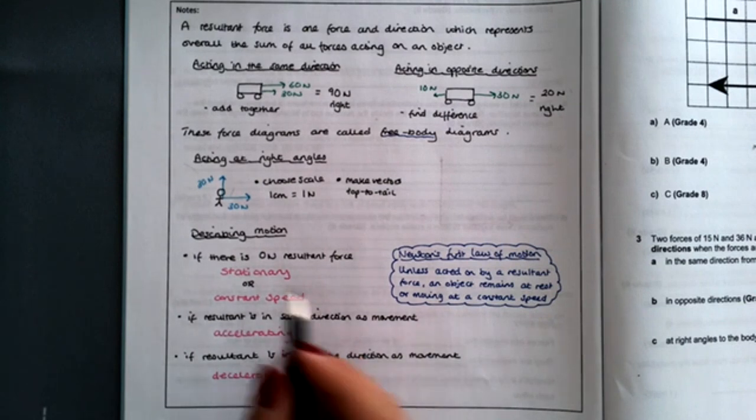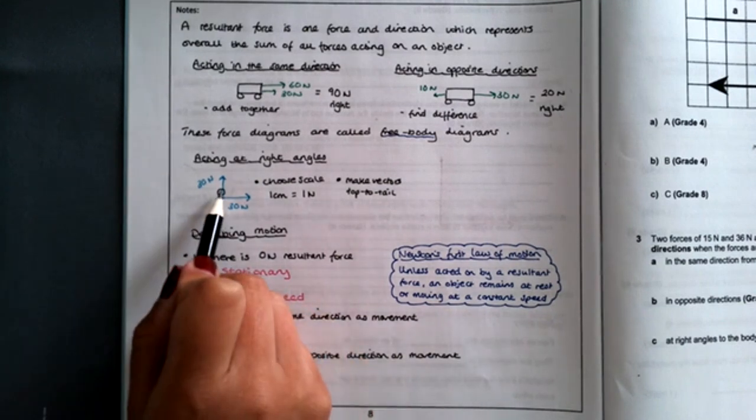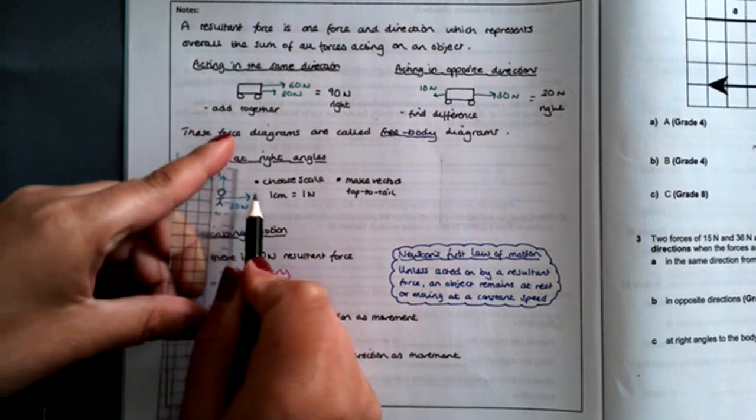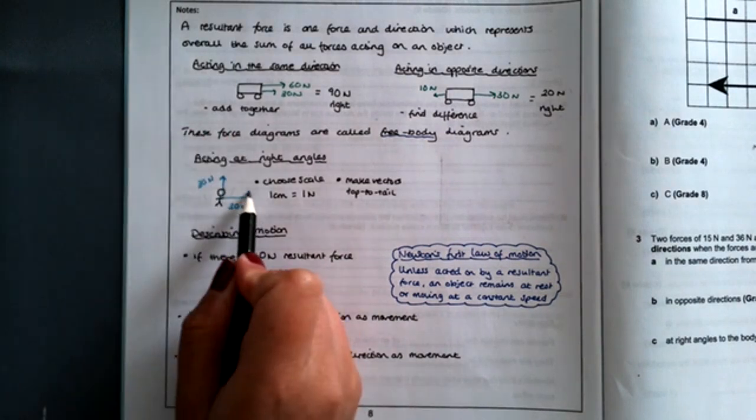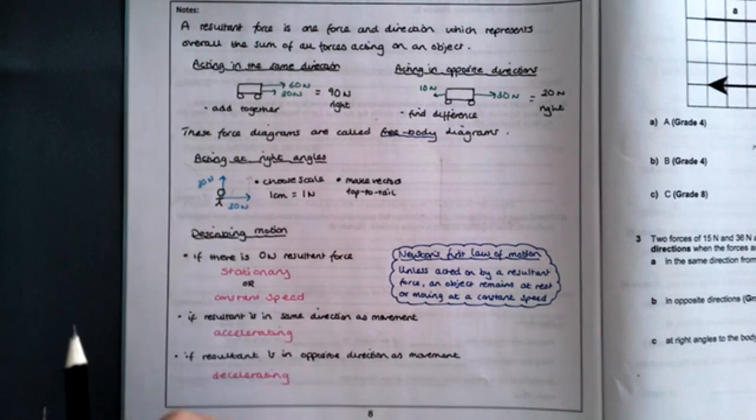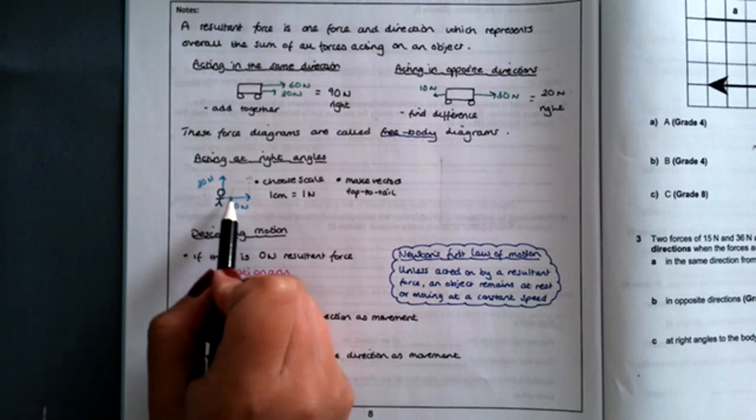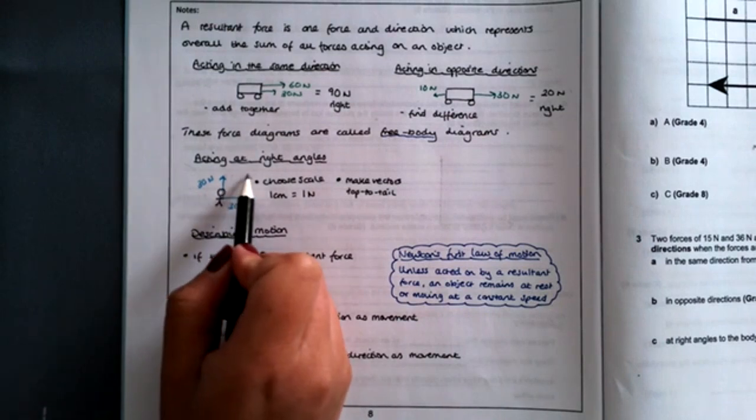There are two ways of doing this. You can move this arrow up and across and attach it to here, like so. Or you can move the bottom one and attach it to the top, like so.